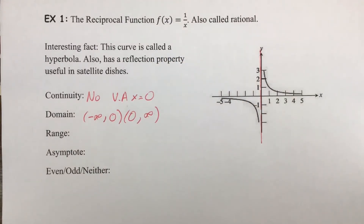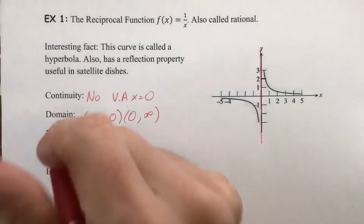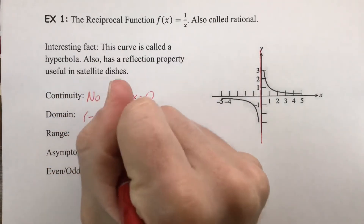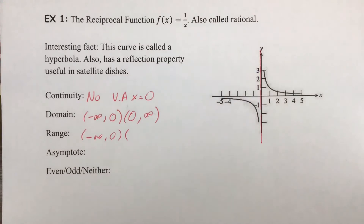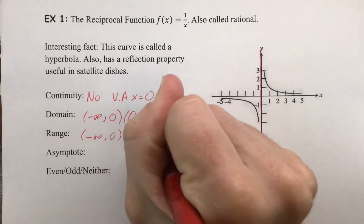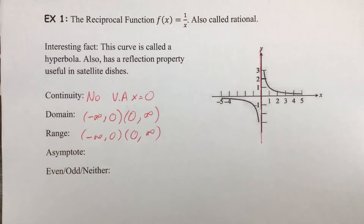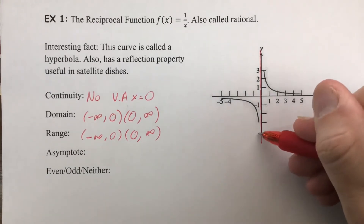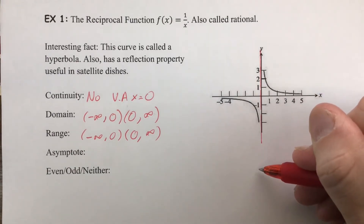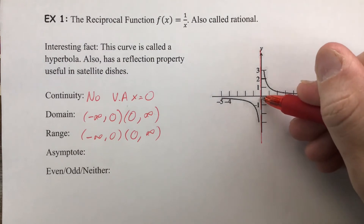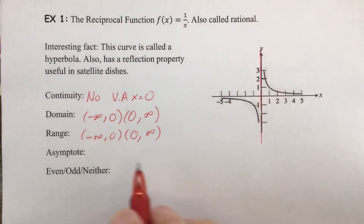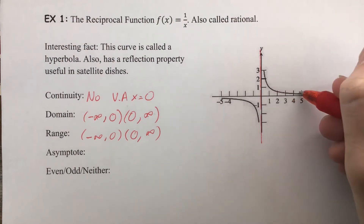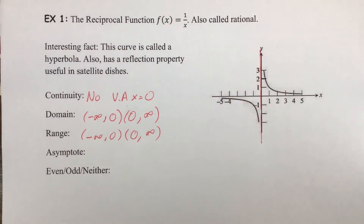The range is going to be the same structure: negative infinity to zero, open, then picking up again after zero and going to infinity. The graph extends forever downward (negative infinity), and at the x-axis — which is at zero — it breaks, then picks up and goes up forever.